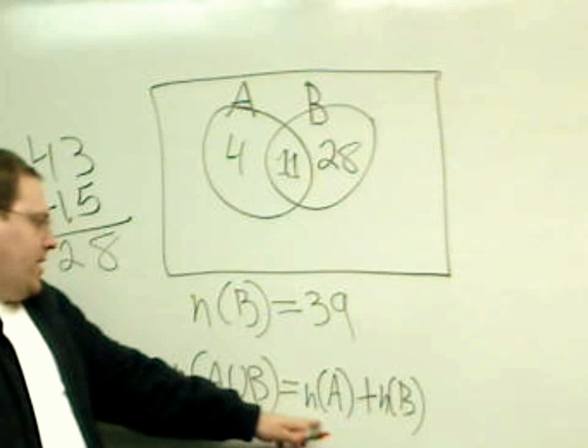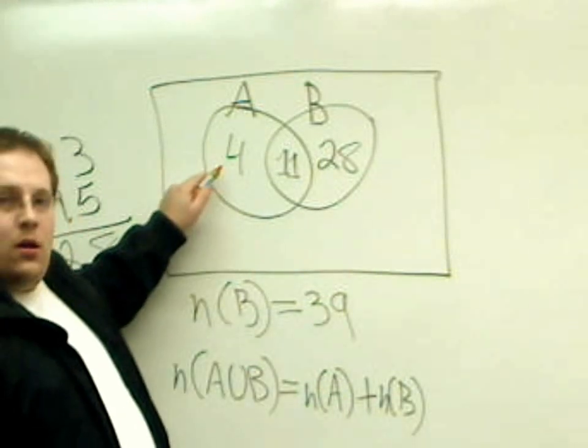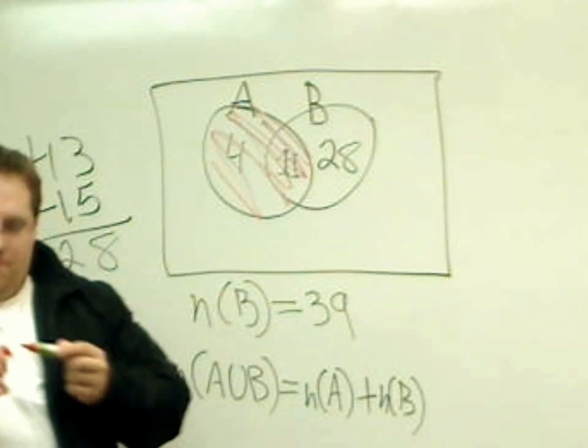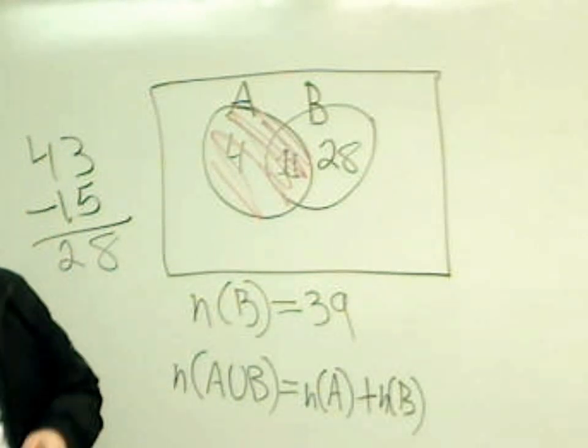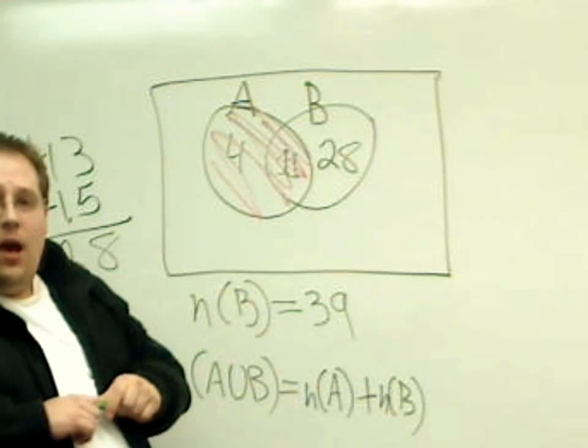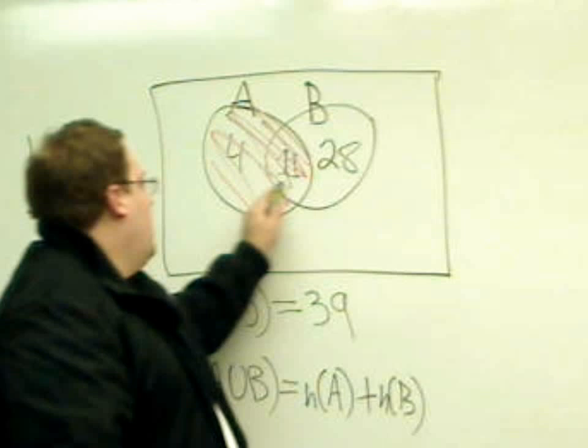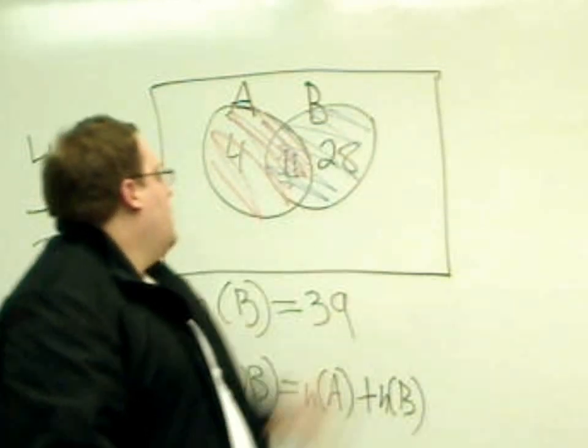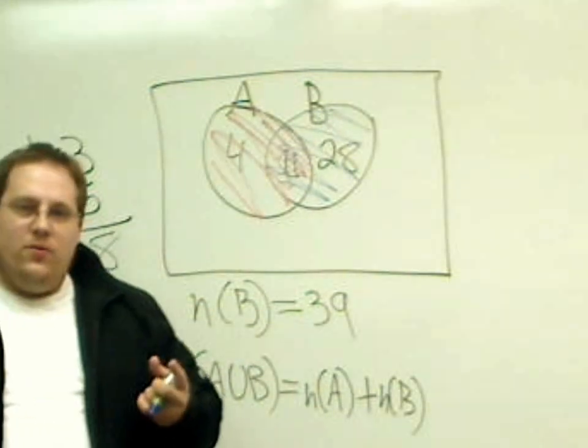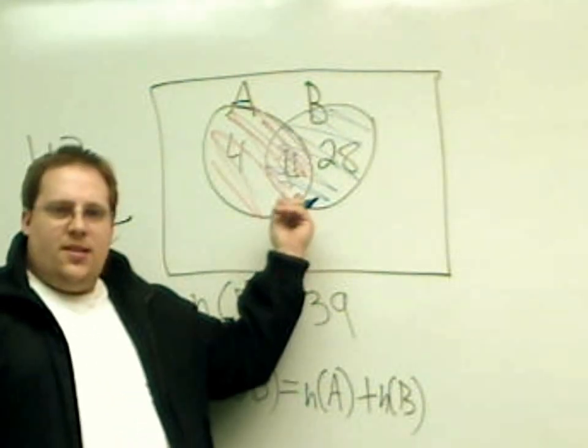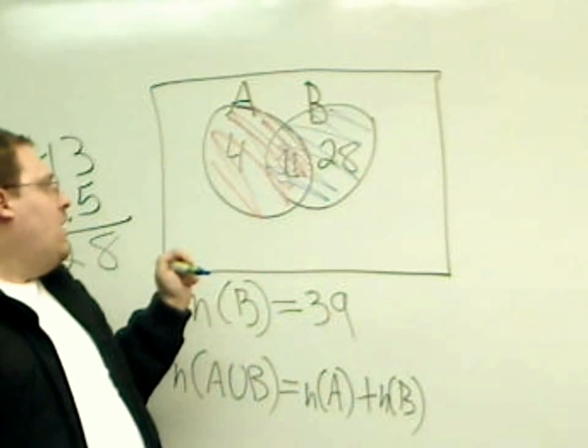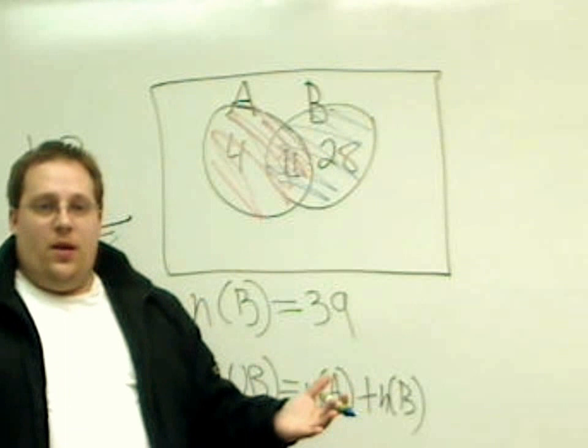Notice, if I add up all the things in A, that would be all of this stuff. If I add to that set all of the things in B, it's all of that stuff. You might have noticed I shaded this section twice. I included it because it was part of A, and then I shaded it again because it's part of B.